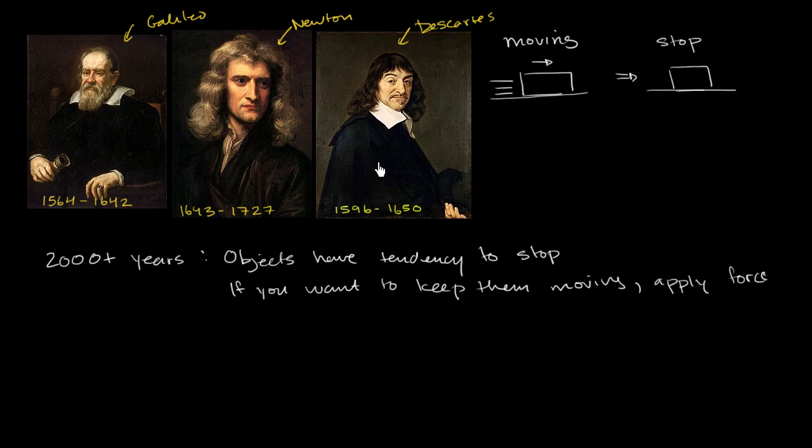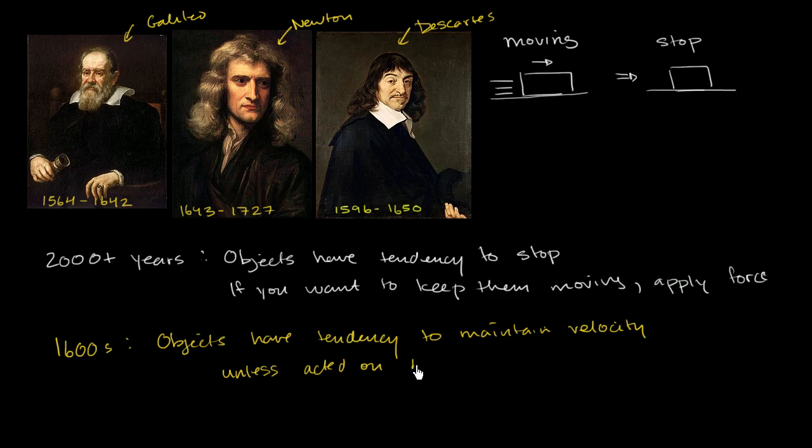And their big insight, which was very unintuitive at the time - so now we come to the 1600s - is that these three gentlemen said maybe it works the other way. Maybe objects have a tendency to maintain their velocity, so their speed and their direction, unless they're acted on by an unbalanced force.